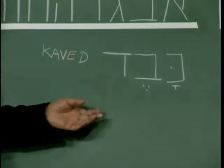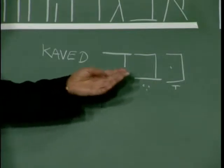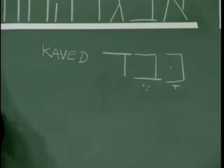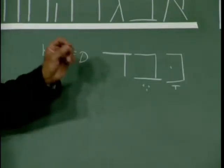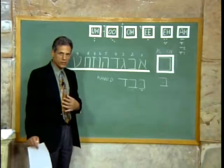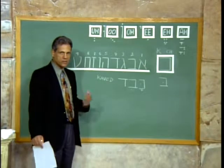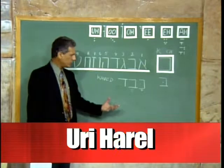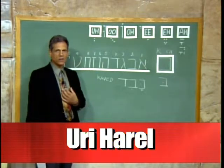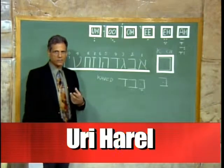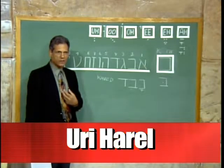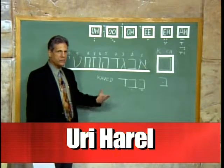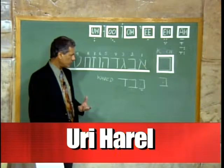Interestingly enough, 'kaved' is heavy. So if we use this as a root — a three-letter root — we will look at it as the concept of heavy. But 'kaved,' with exactly the same spelling, is also the liver — the human liver is 'kaved.' And you would ask yourself why, what is the connection? Why is heavy associated with liver? Because the liver is the most dense organ in the body, and it's heavy — it's a filtration system and the most dense part.